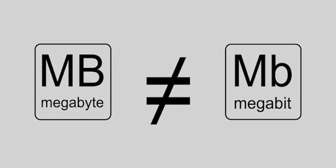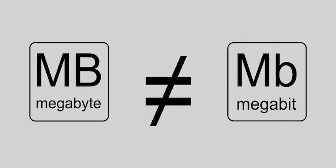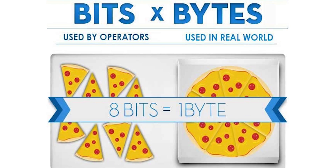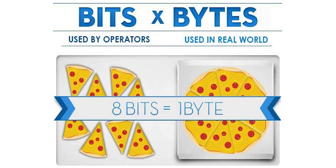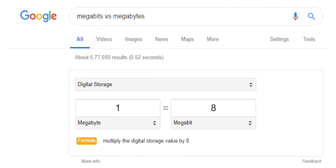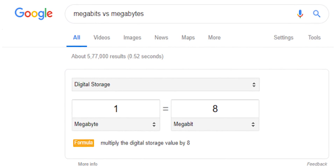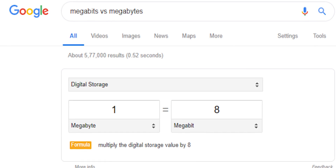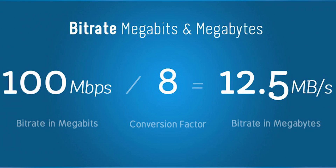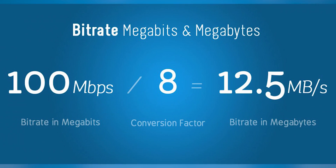Next up, we have internet speeds. You might have noticed that even though you subscribe to say a 50 Mbps connection, your download speeds are around 6 Mbps. This is because to you, MB might mean megabyte, but internet providers advertise in megabits per second. Both of them have the same MB acronym, but the difference is a megabyte equals 8 megabits. So you'll generally get one-eighth of the speed that you see on paper, at least for downloads.